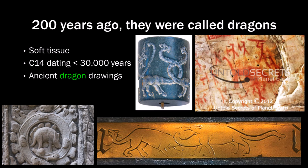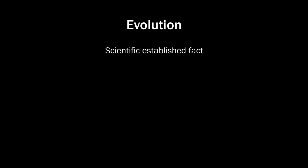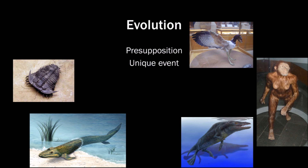So far, the evidence does not show evolution is a scientifically established fact. The theory is largely contradicted by the evidence. Alternatives are not considered, not because of the evidence, but the theory is a mere presupposition. All the alleged transitions that do not have evidence would be unique events even if they would have happened.